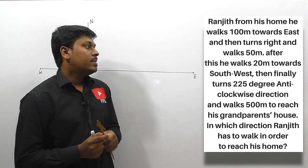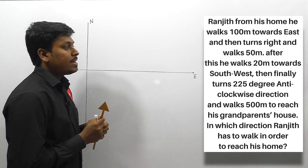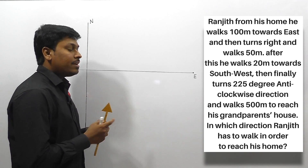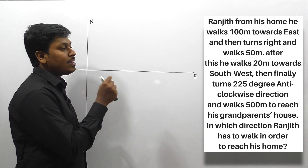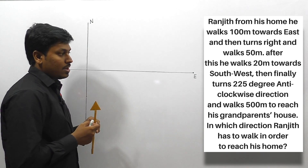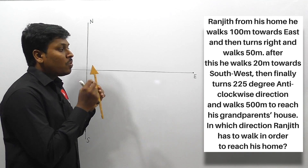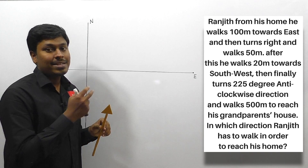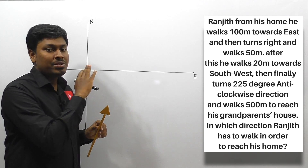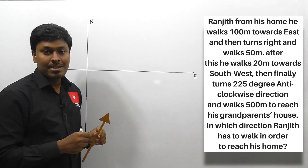Question number one: Ranjit from his home walks 100 meters towards east, then turns right and walks 50 meters. After this he walks 20 meters towards southwest, then finally turns 225 degrees anti-clockwise and walks 500 meters to reach his grandparents' house. In which direction does Ranjit have to walk in order to reach his home? This is one of the most important questions expected in upcoming IBPS PO. The first three lines are easy but turning 225 degrees anti-clockwise is where most students make a mistake.